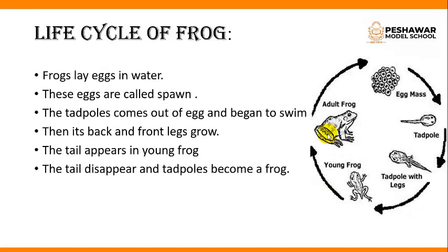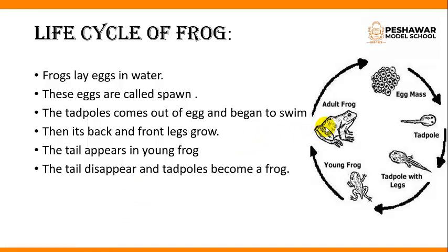Now we will discuss the life cycle of frogs. Frogs lay eggs in the water. Frogs live both on land and water, but when they lay eggs, they go into the water. Their eggs are known as spawn. Then the tadpole comes out of the egg and begins to swim. The tadpole grows inside the egg, then comes out and swims. Then its back and front legs grow, and the tail appears in the young frog. As it becomes young, its jaw grows. When the frog becomes adult, its tail disappears and it comes out of the water and begins to live on land.